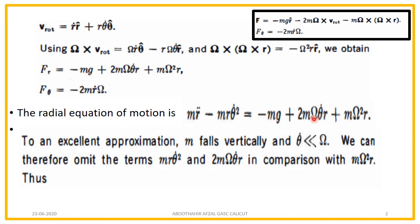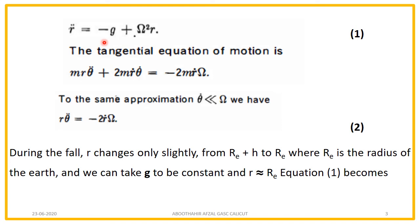After neglecting the small terms, the equation becomes m times r-double-dot equals minus mg plus m times omega-squared times r. Removing m from both sides: r-double-dot equals minus g plus omega-squared times r. For the theta equation: m times r times theta-double-dot plus 2m times r-dot times theta-dot equals minus 2m times r-dot times omega. Applying the same approximation and neglecting the second term, we get r times theta-double-dot equals minus 2 times r-dot times omega.